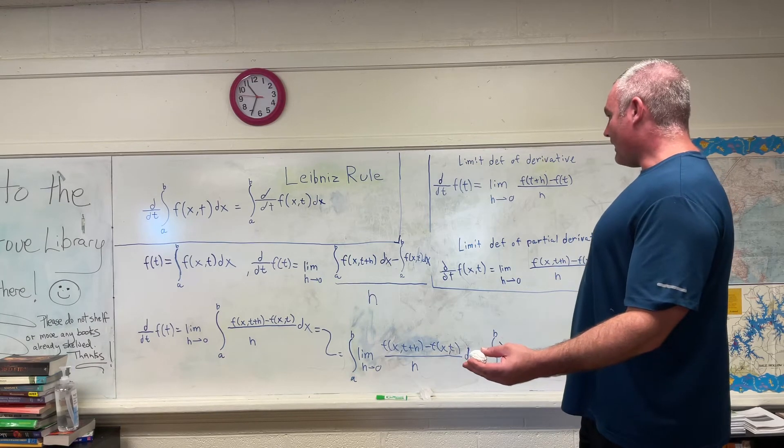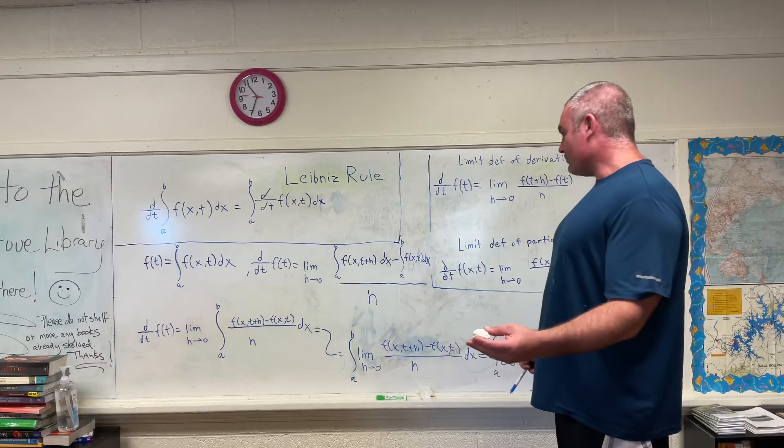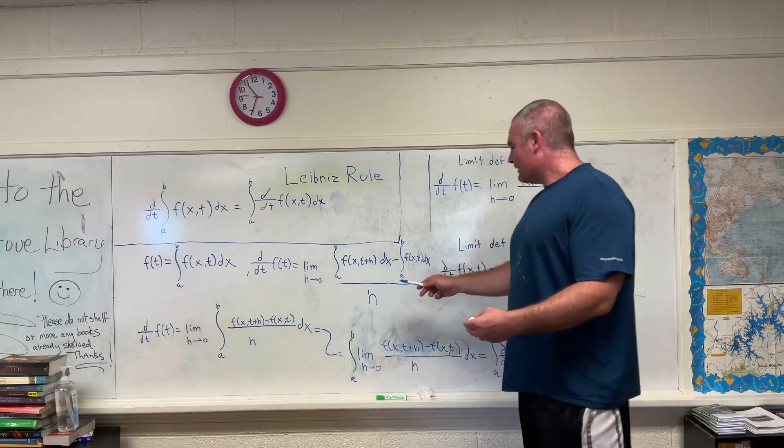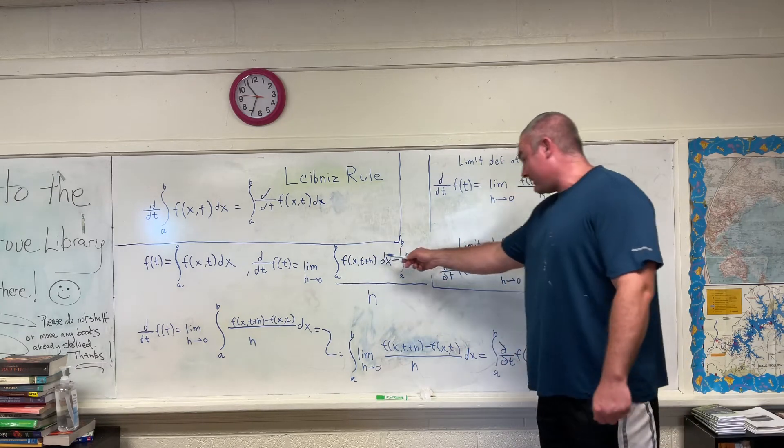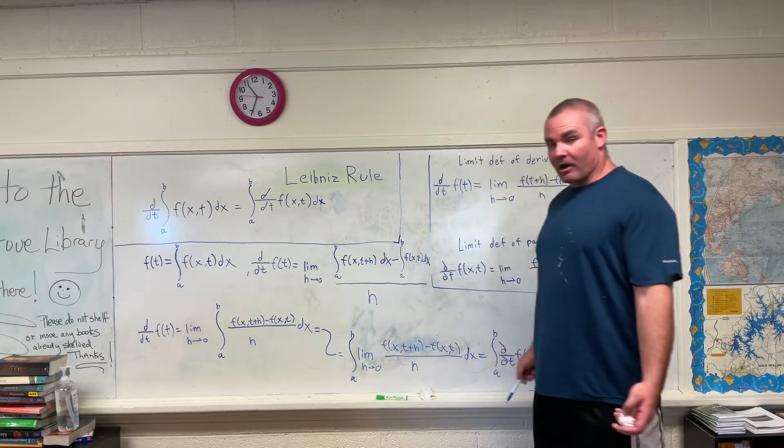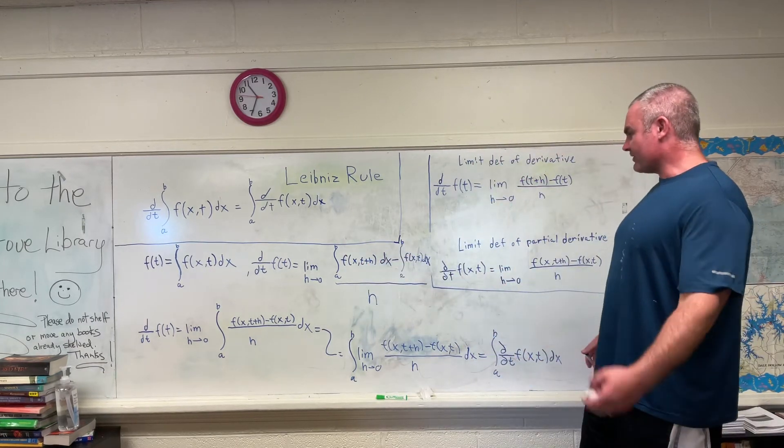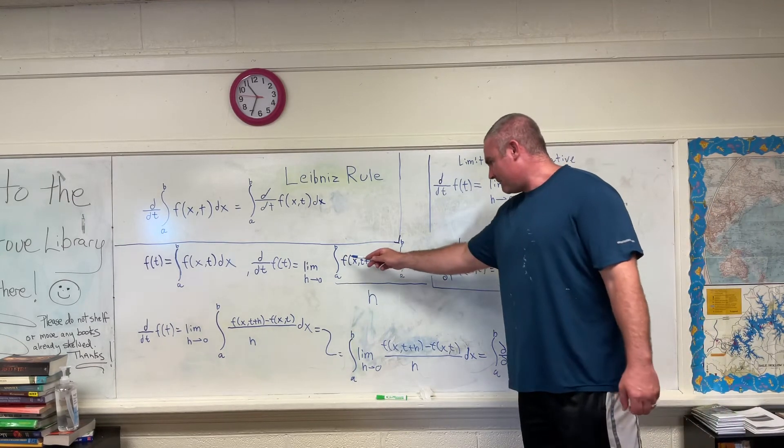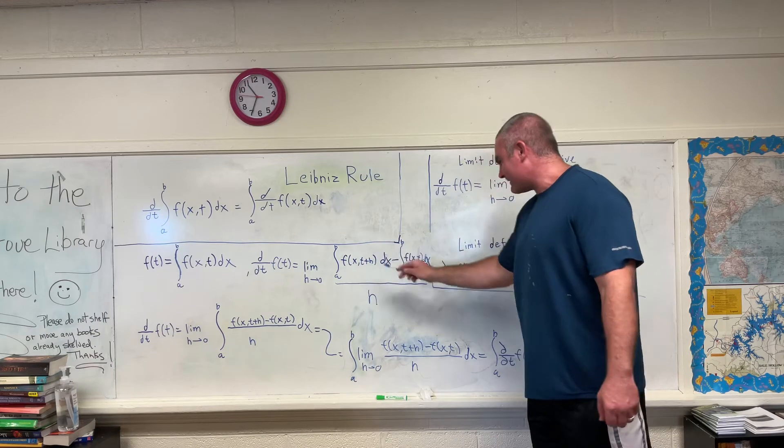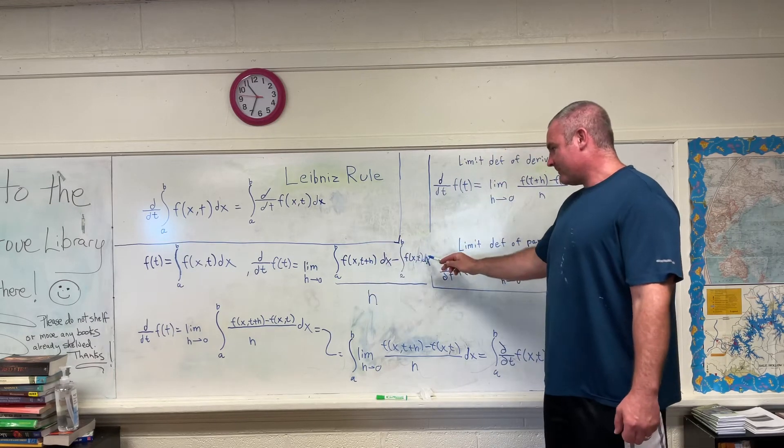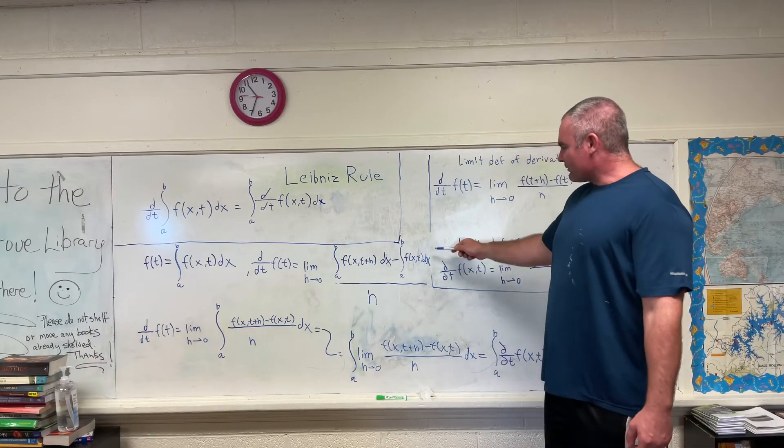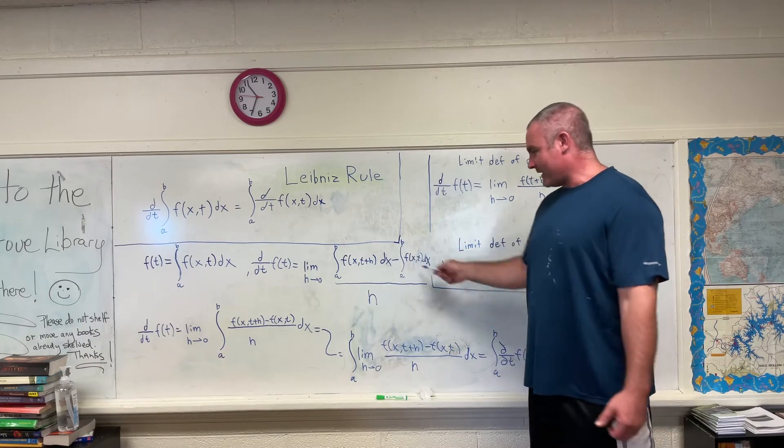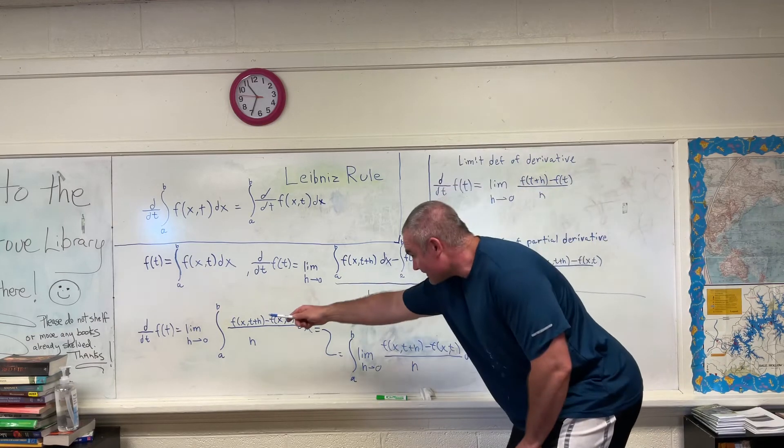So now what we're going to do is we're going to bring, we're going to combine these two. First of all, that shouldn't be a problem using something called linearity. You can combine those things to make the integral from a to b of this minus this. And since you're integrating with respect to x, h is a constant. You can also bring that inside the integral and you can see it in that step right there.